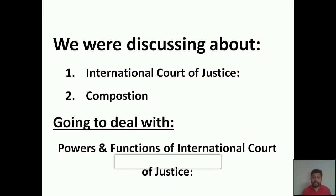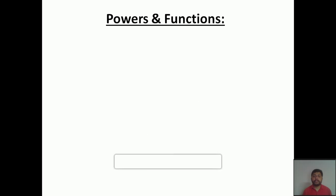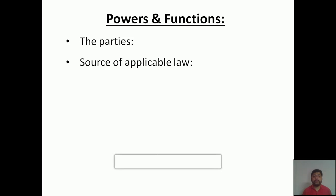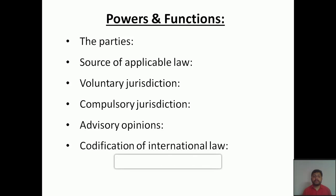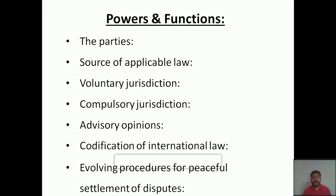Today we are going to discuss the powers and functions of the International Court of Justice. This topic has been divided into seven different parts: first, the parties who can approach the ICJ; second, sources of applicable law; third, voluntary jurisdiction; fourth, compulsory jurisdiction; fifth, advisory opinions; sixth, codification of international law; and seventh, evolving procedures for peaceful settlement of disputes.